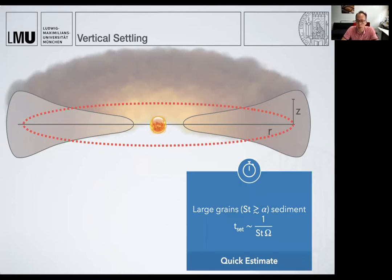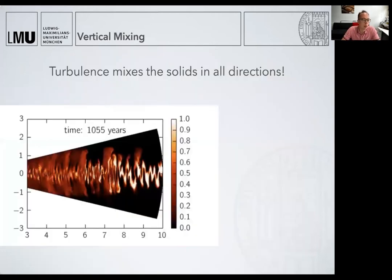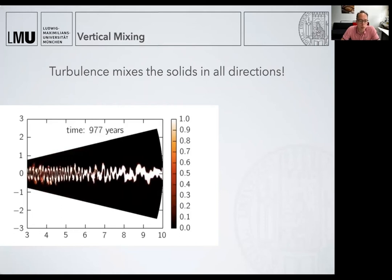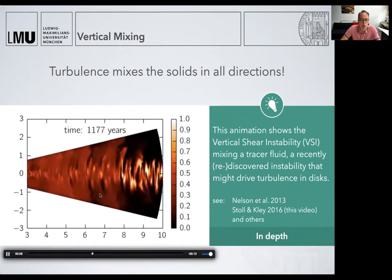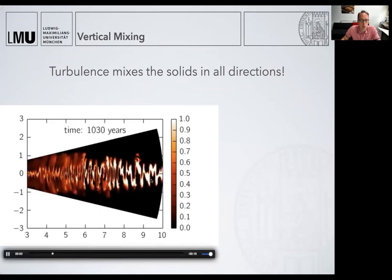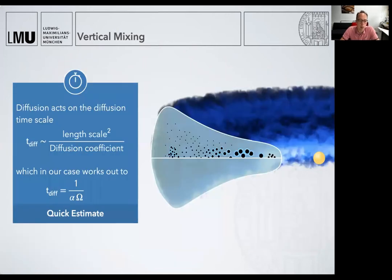So the takeaway here is again: large particles sediment and large particles also drift. The settling timescale we can write as one over the Stokes number times the orbital frequency. So if we had only this, then all the particles would move to the midplane, but this actually turns out not to be right. Particles seem to be distributed vertically, and that means we need some form of turbulence that is balancing this sedimentation. Otherwise, disks would look like Saturn's rings. Here you see one exemplary movie of the vertical shear instability, a hydrodynamic instability that causes some turbulence, and while the movie starts with all density in the center, you see how quickly this tracer is mixed by the turbulence.